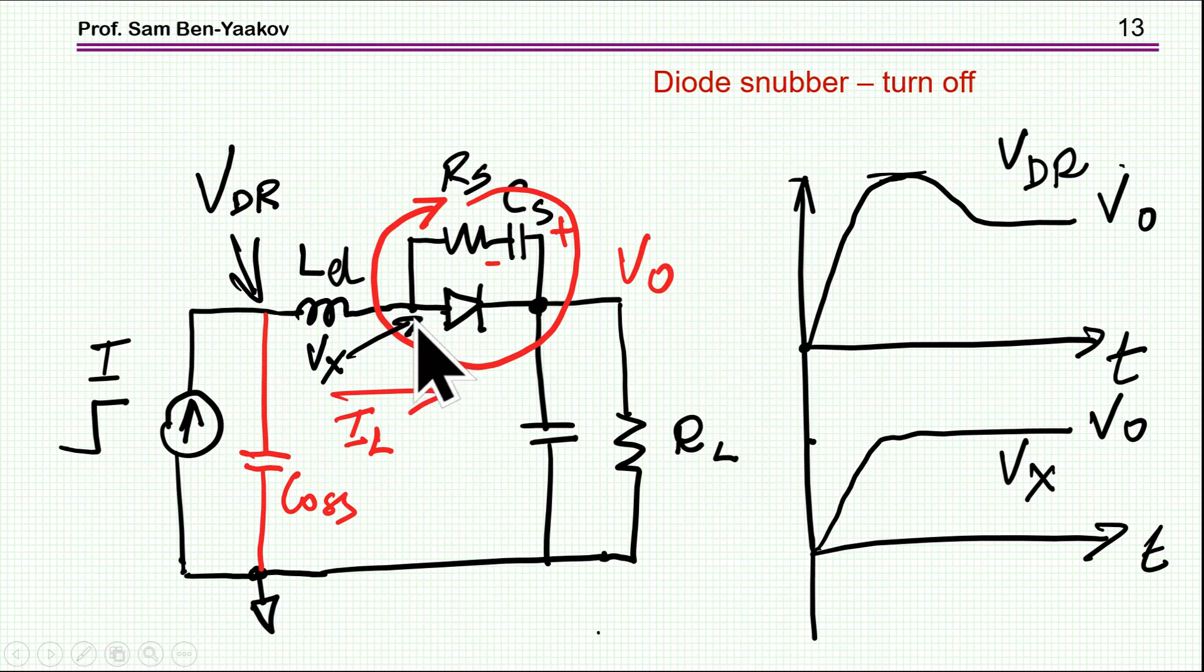However, if you do have a snubber, then there is an issue here that you have to take into account, and that is the following. Once the diode starts to conduct, then this capacitor, the snubber capacitor, will discharge. It was charged to V out, and now, as the diode starts to conduct, we have a discharge path. It looks like a reverse current through the diode, but really it's not, because the main current is going through here from the main inductor, and then there is an additional current here during this discharge. So, we have to take into account that we need time for this discharge.